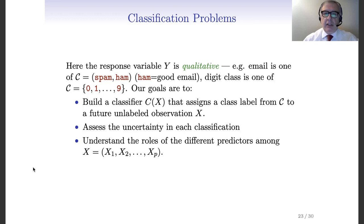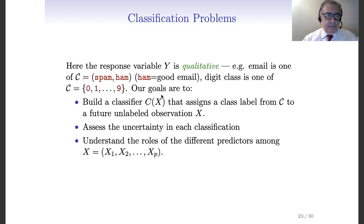When classification is considered, our goals are: first, we would like to build a classifier c(x). This classifier takes into consideration the feature vector and, based on this feature vector, decides what class label should be assigned to observation x. The class label is of course taken from the set C. We have seen that C could be binary or could be a finite number of categories.